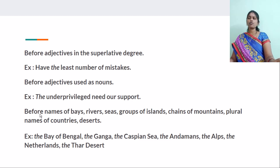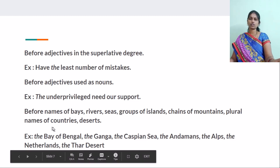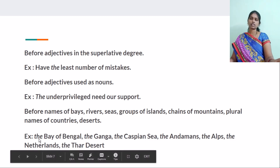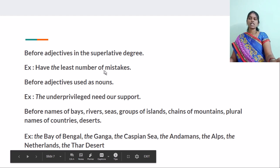And before names of bays, rivers, seas, groups of islands, chains of mountains, plural names of countries, and deserts — we use THE before them. Like the Bay of Bengal, the Ganga, the Caspian Sea, the Andaman Islands, the Alps, the Netherlands, the Thar Desert — because they are particularly named.